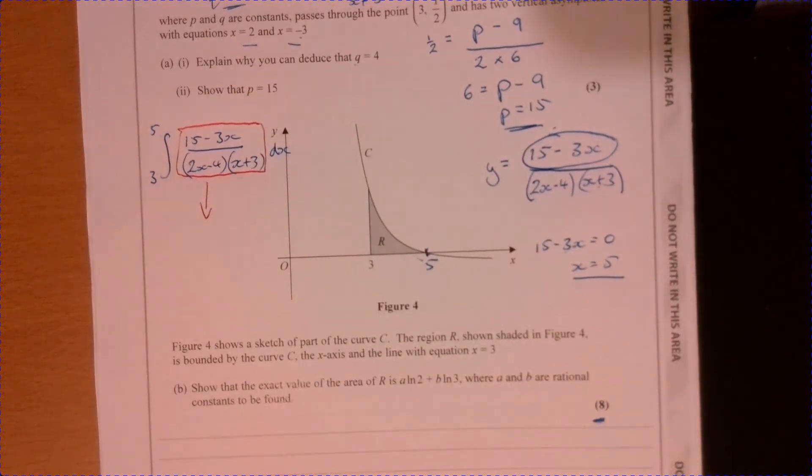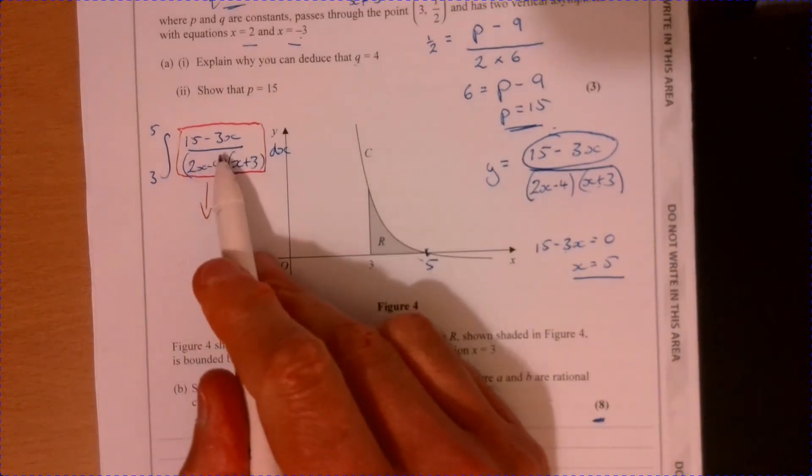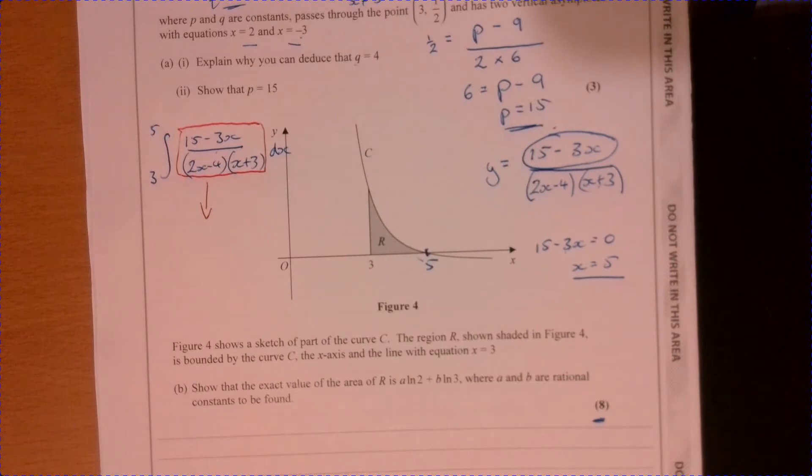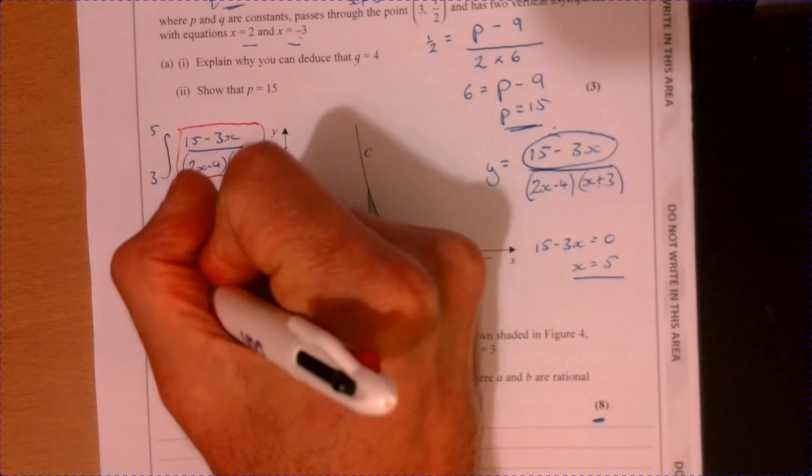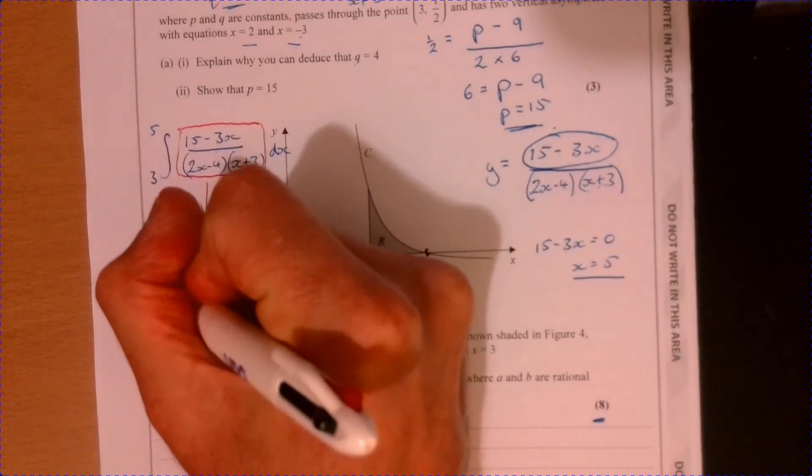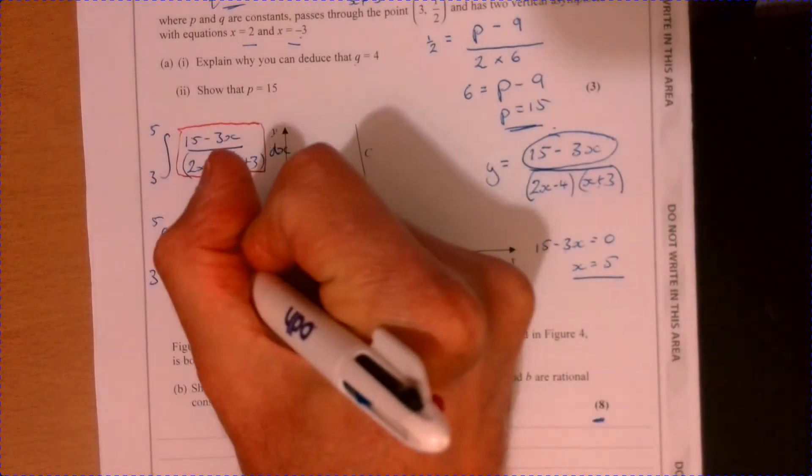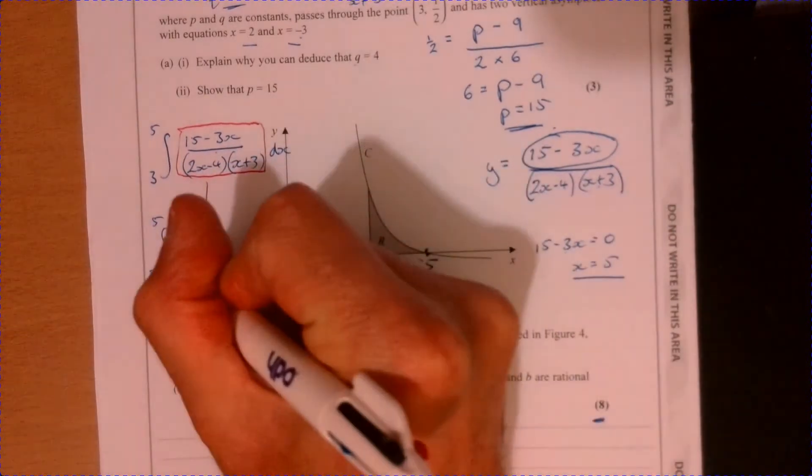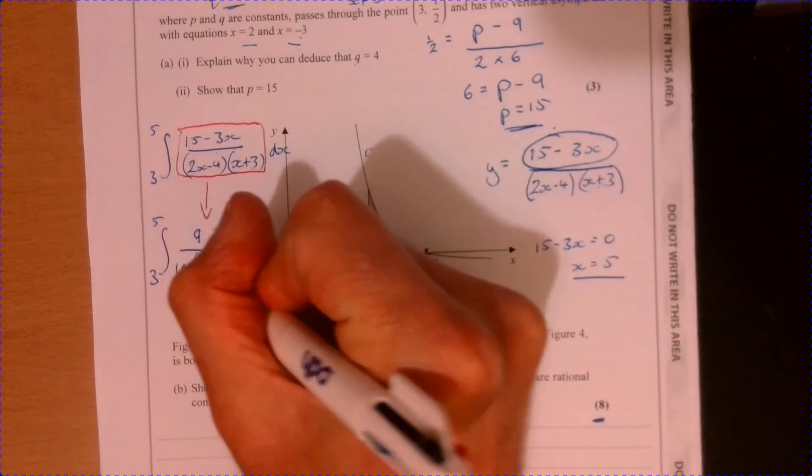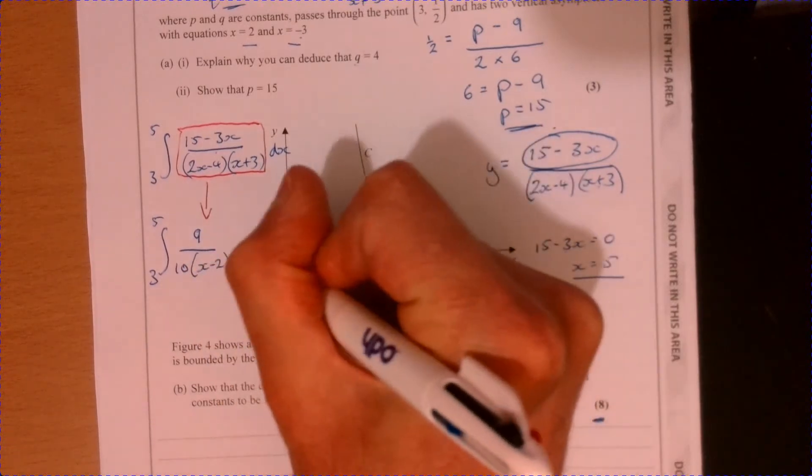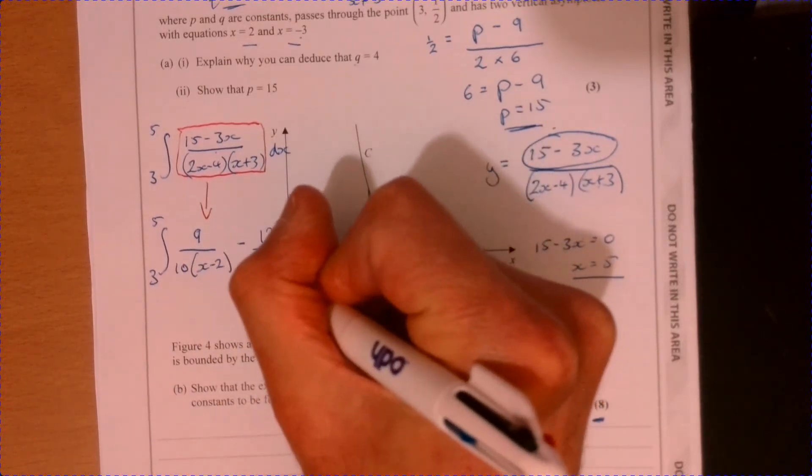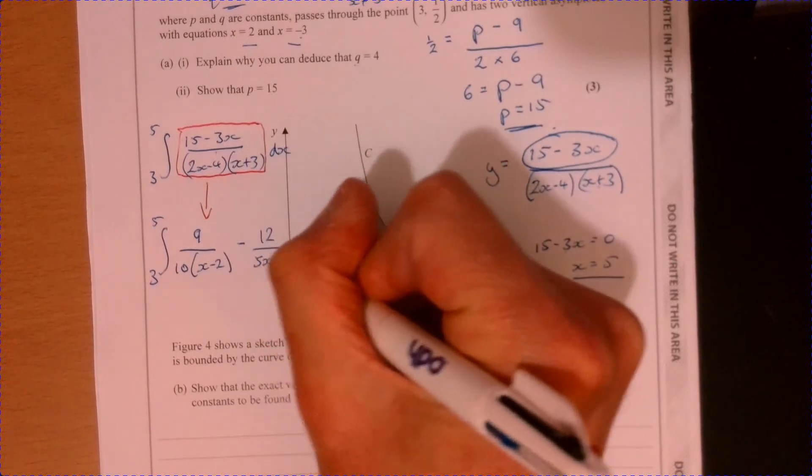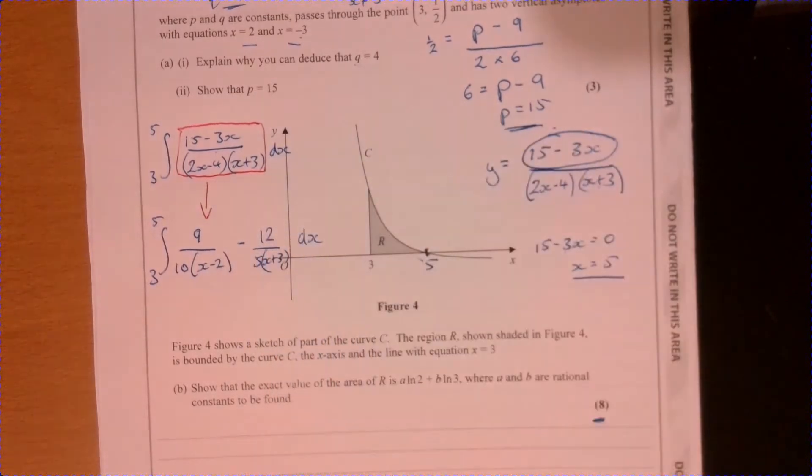Now, I'm not going to do the partial fraction bit for you, but if you need to practice partial fractions, obviously go and practice them. This is a relatively simple partial fraction to go and do. But it's spotting that you've got to write it in partial fractions. That's like the tricky bit, I suppose. So in partial fractions, that's going to give you, I'm just going to give you the answer to this bit. So we're going to have 9 over 10, 2x minus 2, and then take away 12 over 5, x plus 3, and we're going to integrate this.